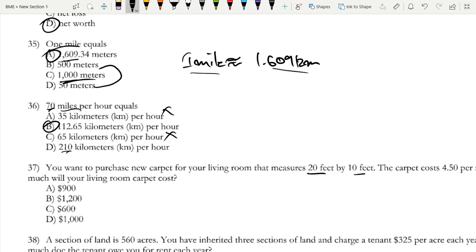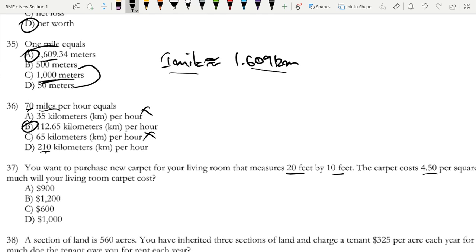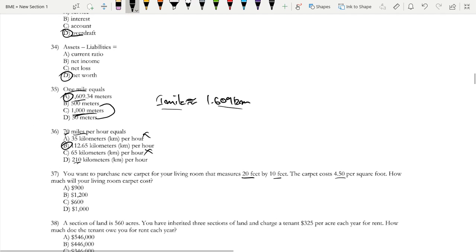In your living room that measures 20 feet by 10 feet, you have a new carpet and the carpet costs $4.50 per square foot. How much will your living room carpet cost? So you have 20 by 10, so that's 200 feet squared. And you pay $4.50 per square foot, so that's 200 times 4 is 800, times that extra 0.5 is $900.